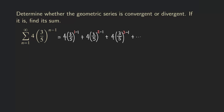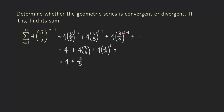Now if you simplify each term, you can see that the first exponent is zero, so you're just going to get four. Then the next term: two minus one gives exponent one, so you get four times three over five, which simplifies to 12 over five. And then the next one is four times three over five to the second power, which gives 36 over 25.